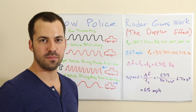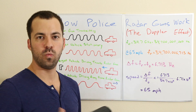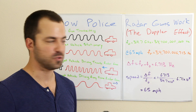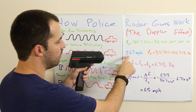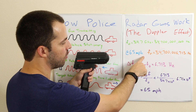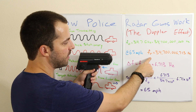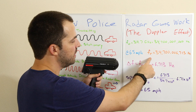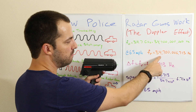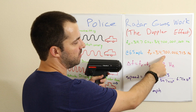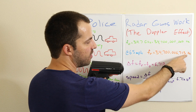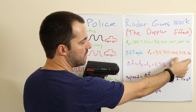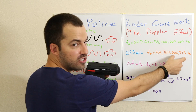Now let's say for our example that we're going to be clocking a car traveling at 65 miles per hour. A car moving at 65 miles per hour — the reflected signal coming back from that car is going to be 34,700,006,713 Hz.